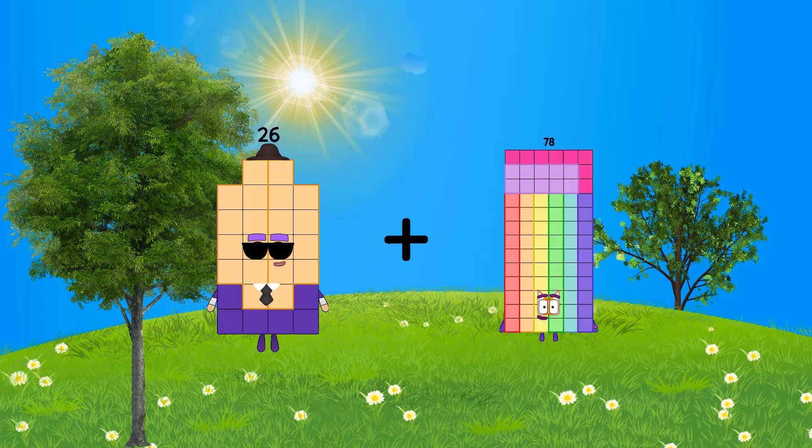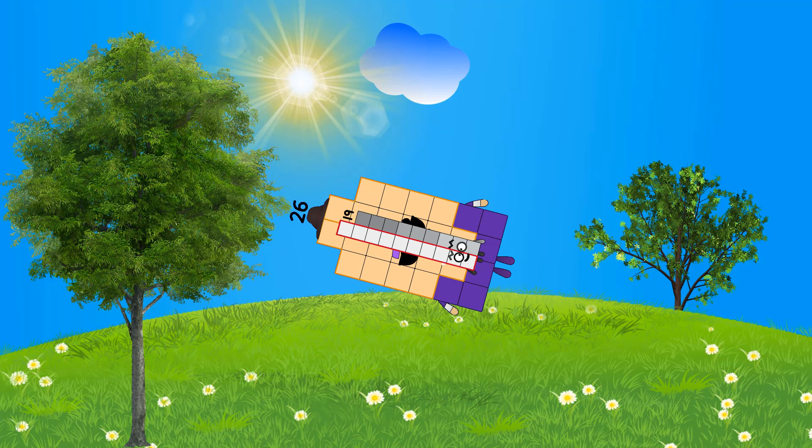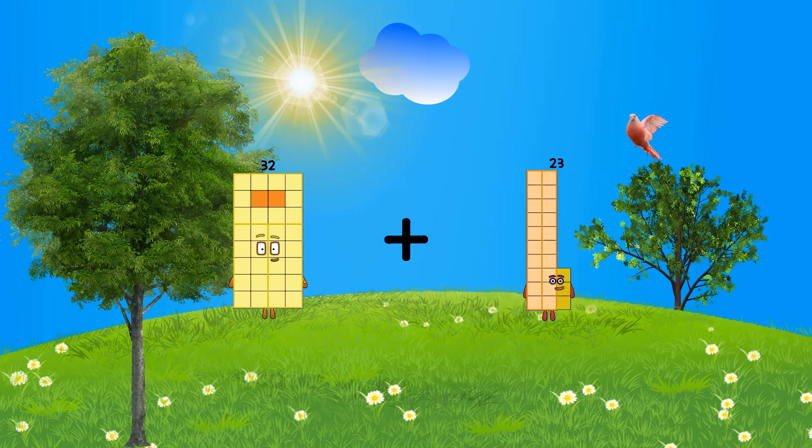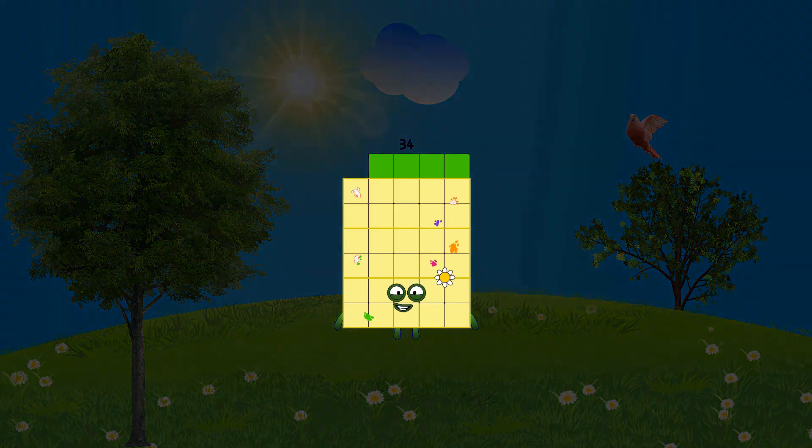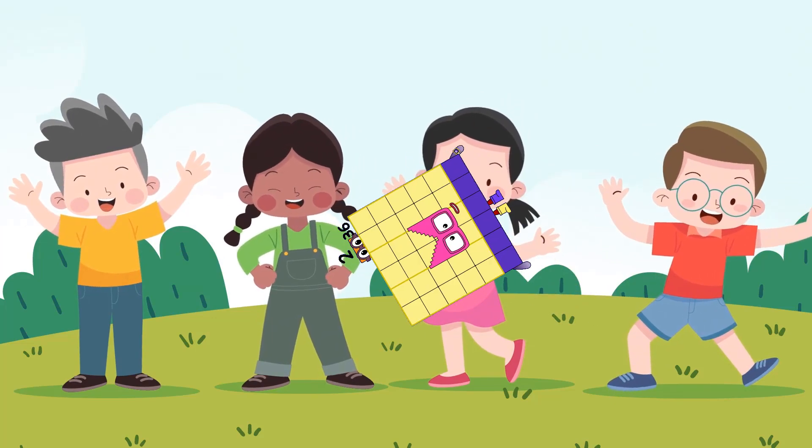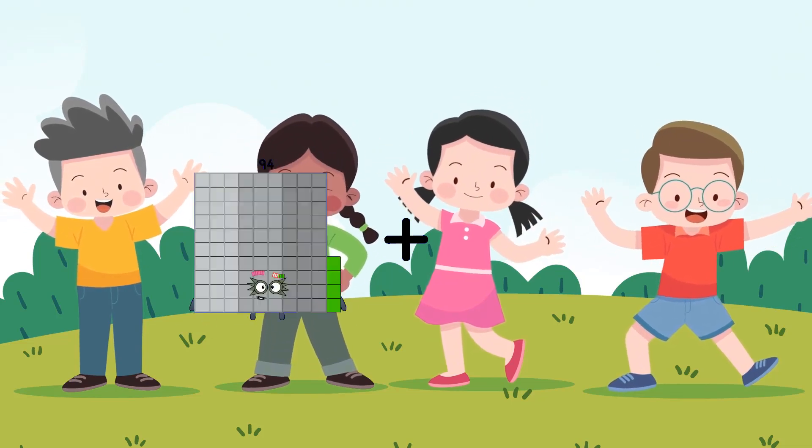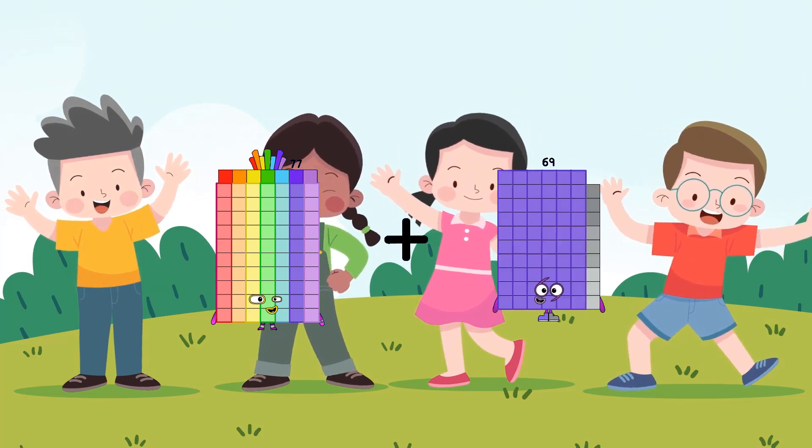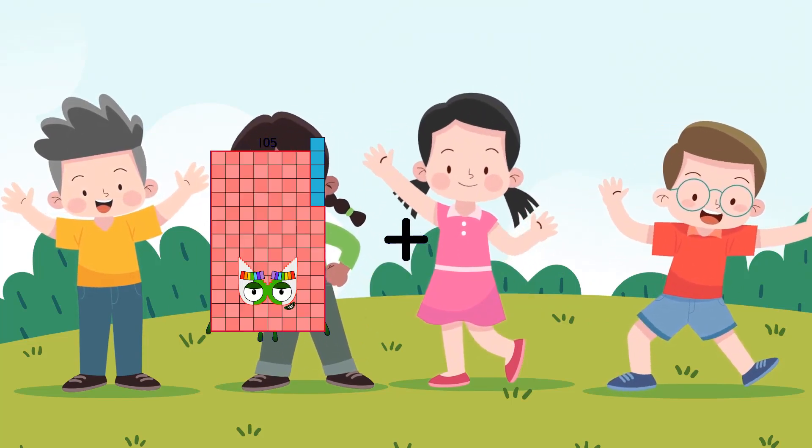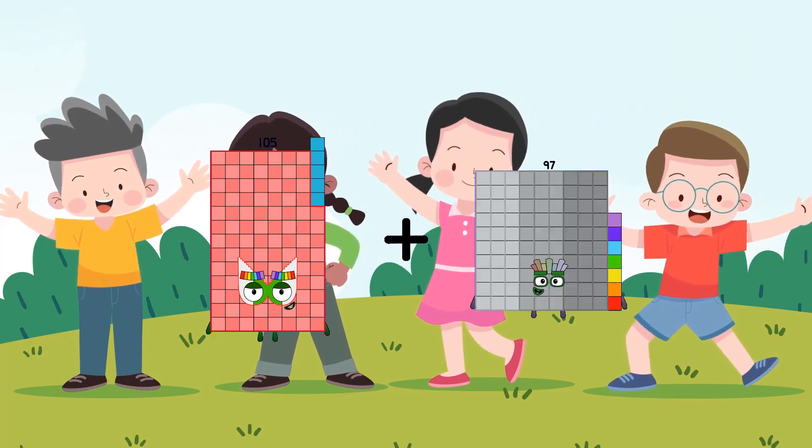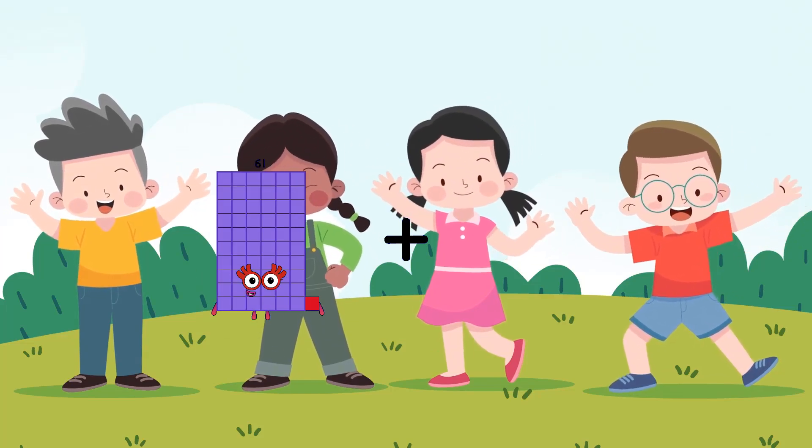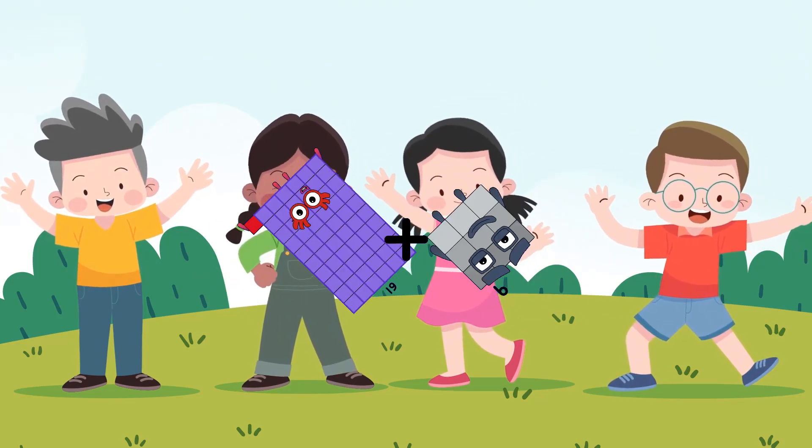26 plus 19 equals 45. 32 plus 2 equals 34. 4 plus 36 equals 38. 77 plus 89 equals 156. 61 plus 9 equals 70.